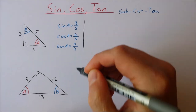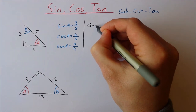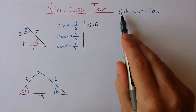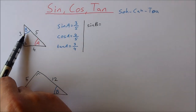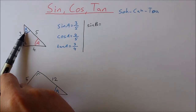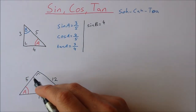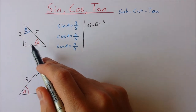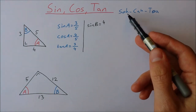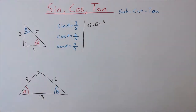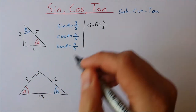Let's do the sine, cos and tan of B. Sine of B — sine is opposite over hypotenuse. Now you need to be careful because we're looking at angle B now. The opposite is now 4. Whereas before the opposite was 3 in relation to A, in relation to B the opposite is 4. The hypotenuse always stays the same — that's always the longest side, the side opposite the right angle — so sine of B is 4 over 5.